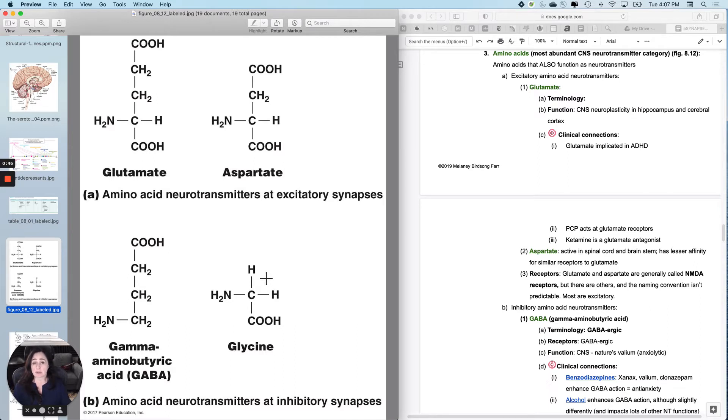The amino acid neurotransmitters, these are the most abundant CNS neurotransmitter category, meaning you find them used all over the brain.